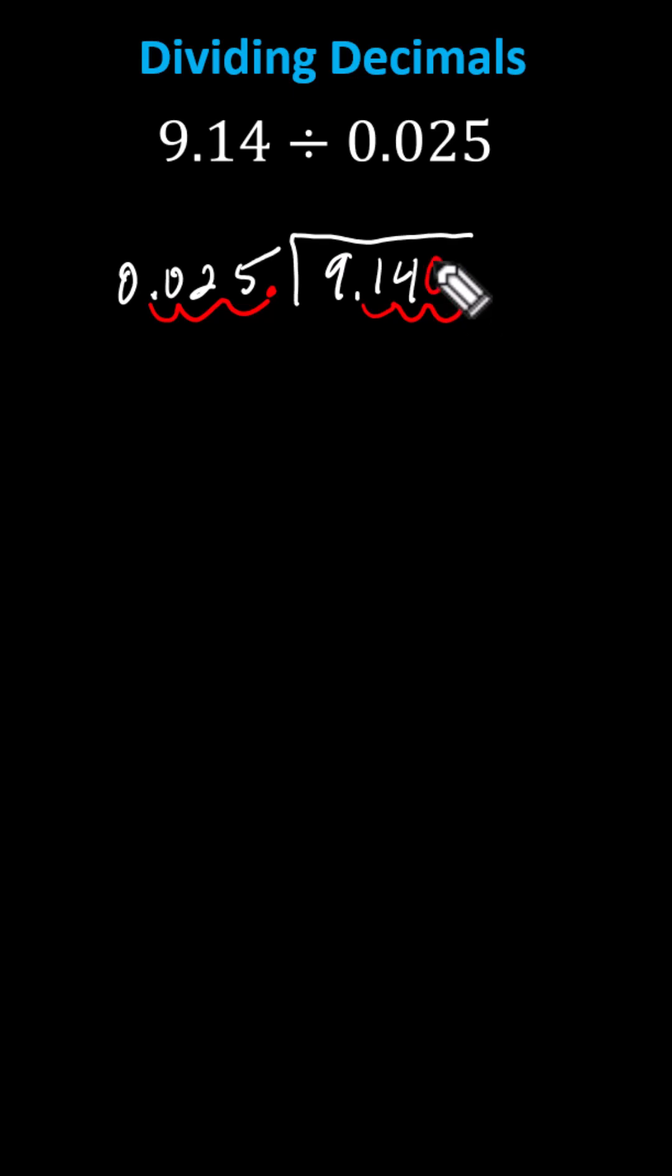This quotient is equivalent to the original quotient. Let's go ahead and rewrite this as 9,140 with a decimal point to the right of the zero, divided by 25, the decimal point to the right of the zero.